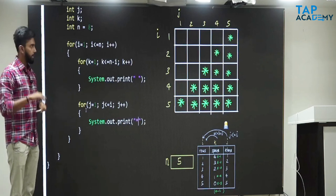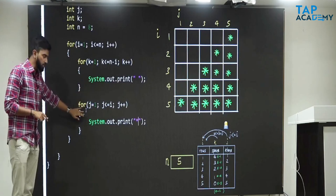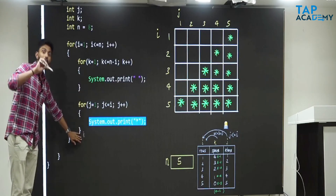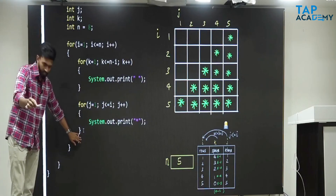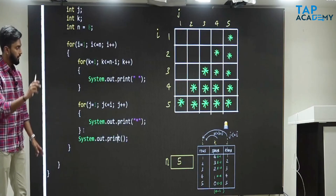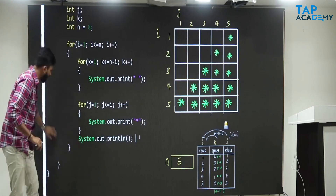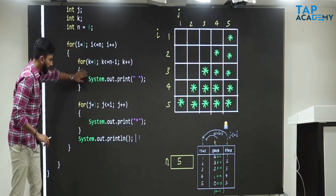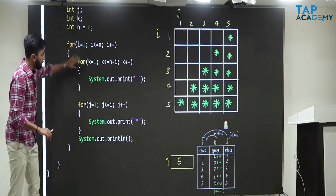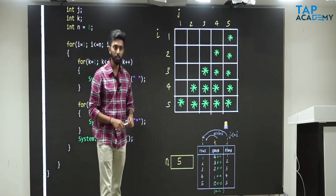See how to read the code: in a row, print spaces, then print stars. After printing stars, what should you do? Take the cursor to the next line using system dot out dot println. After taking the cursor to the next line: next row, print space, print star, next line. Next row, print space, print star, next line. The pattern will be formed.